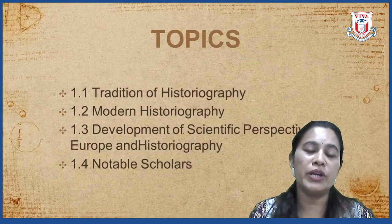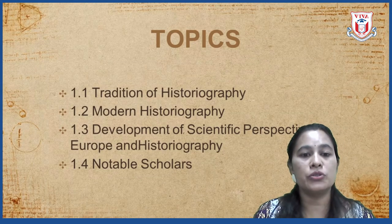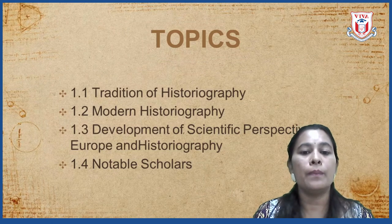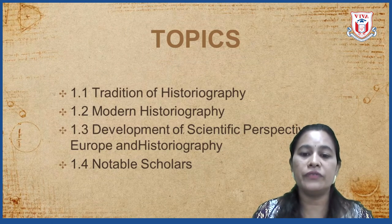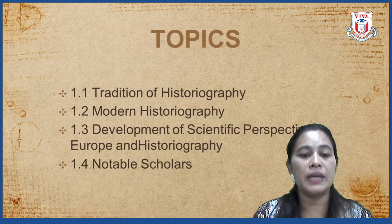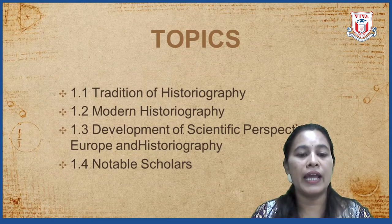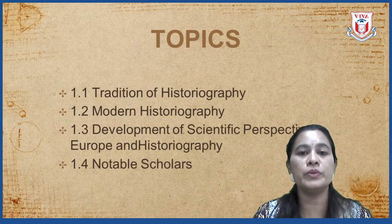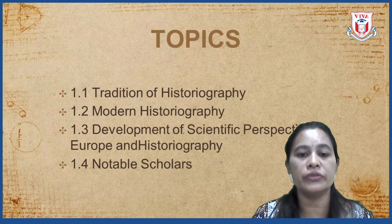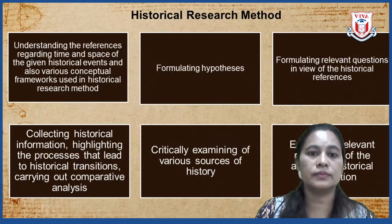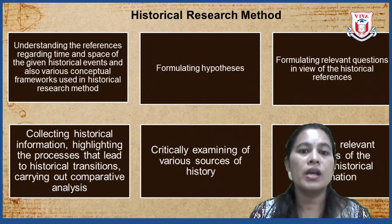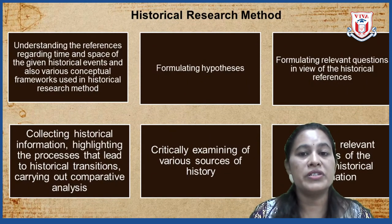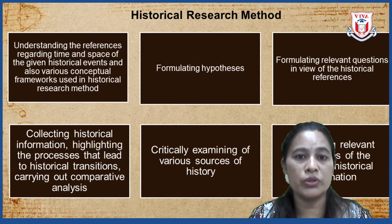In this chapter we are going to cover topics like tradition of historiography, modern historiography, development of scientific perspective in Europe and historiography, and we are also going to discuss about the notable scholars who have contributed a lot in historiography. So historical research methods — you can also call these as the objectives of historiography.